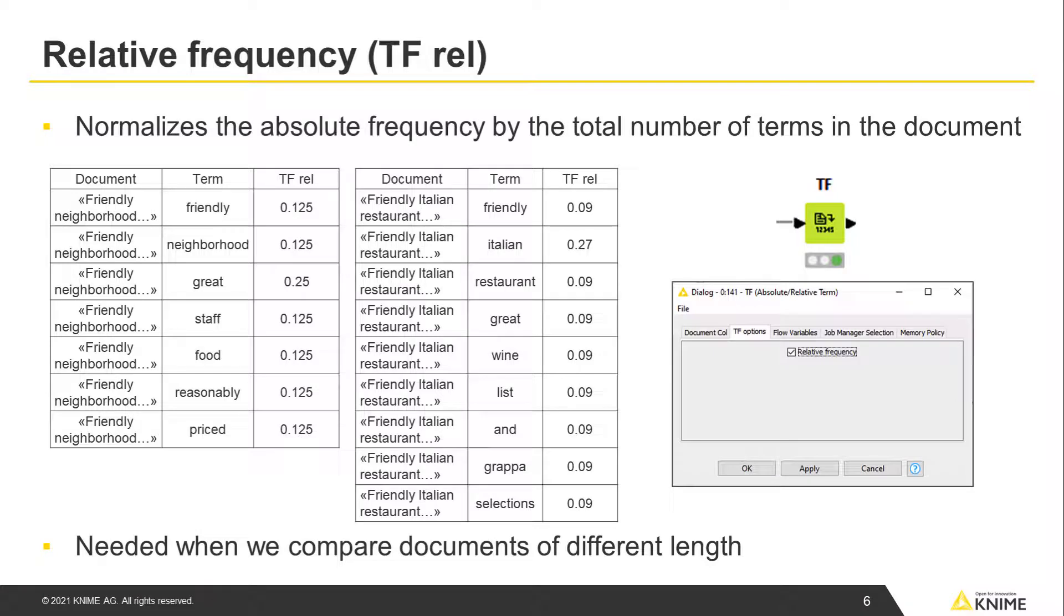Relative frequency normalizes the absolute frequency by the total number of terms in the document. The first document has 8 words in total, and the second document has 11 words. Therefore, the word friendly that appears in both has a greater relative frequency in the first document because it has fewer words in total. In general, relative frequency is needed when we compare documents of different length.